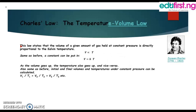Next is the temperature-volume law, studied by Jacques Charles. It states that the volume of a given amount of gas held at constant pressure is directly proportional to the Kelvin temperature. Thus V is proportional to T, and introducing a constant we have V = kT. As volume increases, temperature also increases and vice versa, giving us V₁/T₁ = V₂/T₂, up to Vₙ/Tₙ.